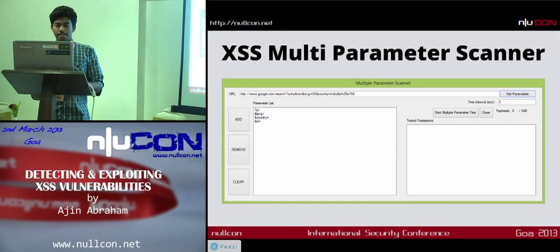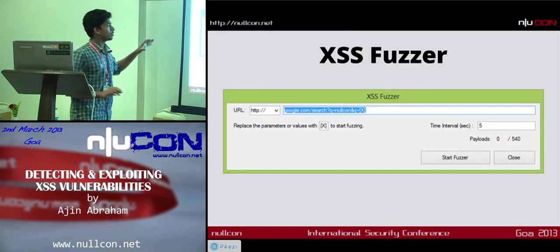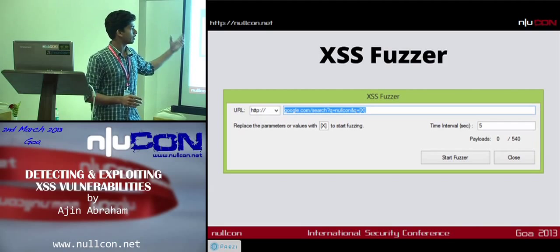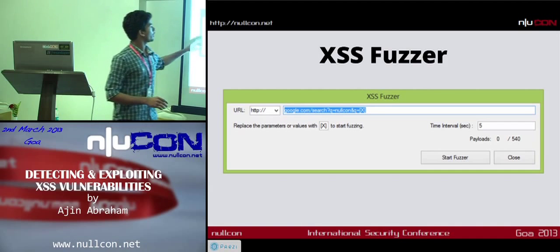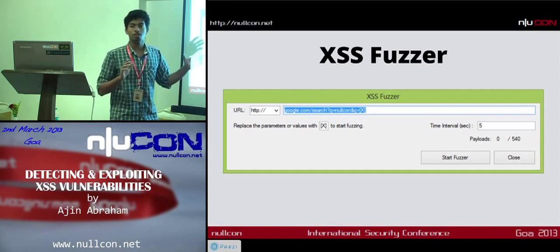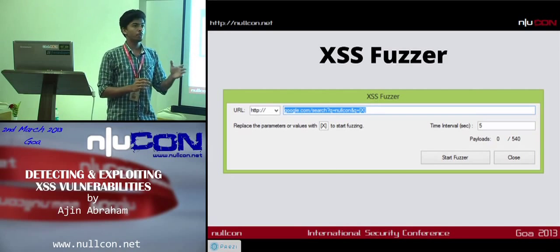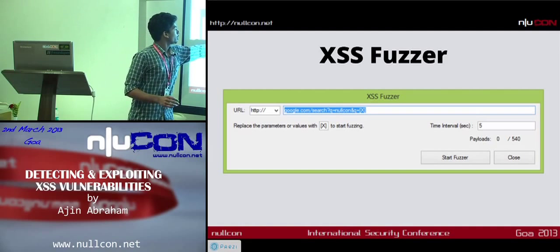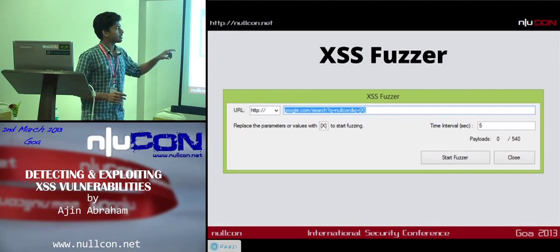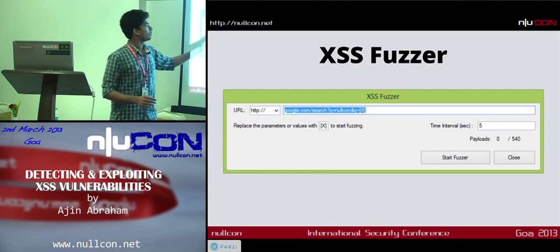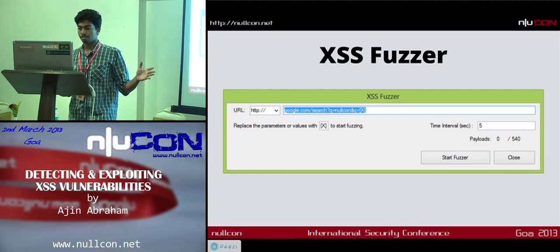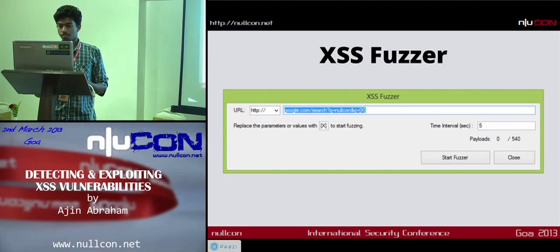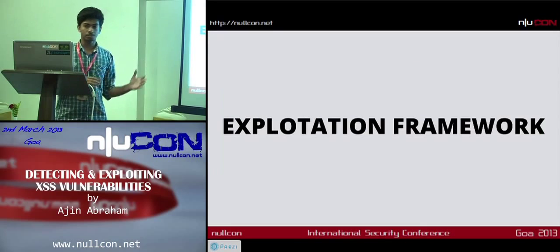That covers the multi-parameter scanner. Next is the fuzzer — if you want to fuzz around with parameters, this will be a great benefit. You can fuzz almost any part of a particular URL. For instance, to detect HTTP parameter pollution, you replace the target area with an open bracket, capital X, and close bracket, then start fuzzing with the payloads. That's the XSS fuzzer. Now we go to the exploitation framework — the first feature is the XSS keylogger.